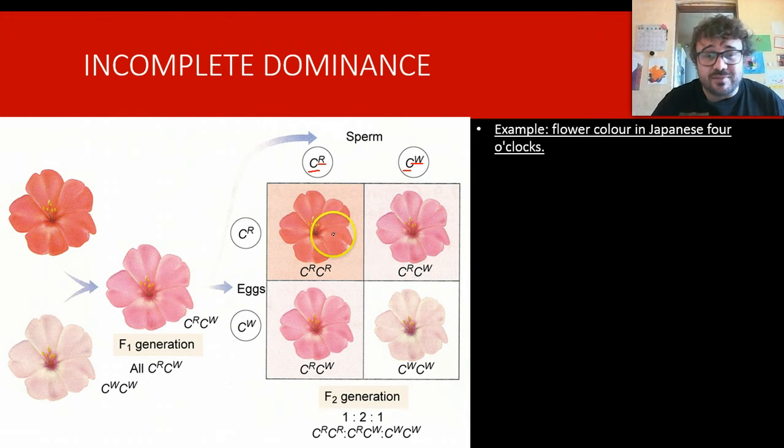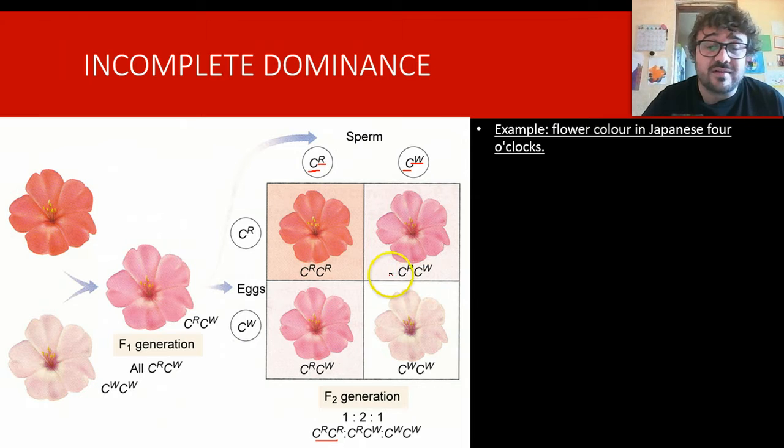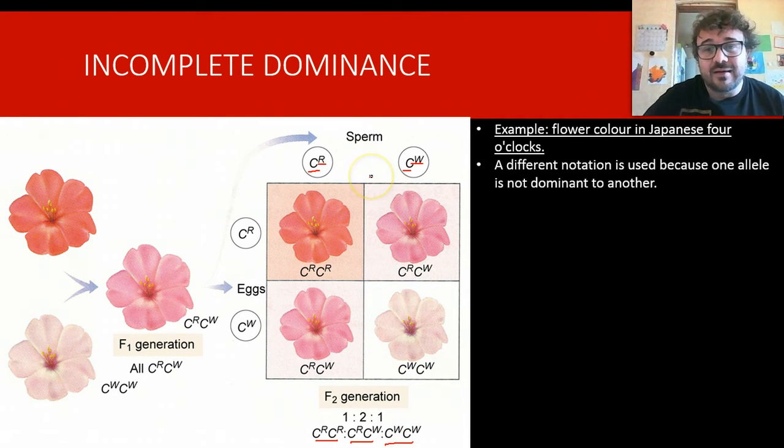So, for example, this is incomplete dominance. We have C^R C^R, so here this is the F1 generation, we're crossing these. You have 1 in 4 will be red, which is this one here. 2 in 4 will be pink, which is this bad boy here. And 1 in 4 will be white, which is this guy here. Now, what we actually see is, you can see that it is an intermediate. So, you've got red, white, and pink is in the middle.